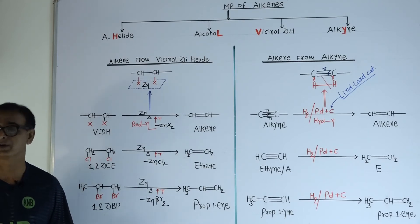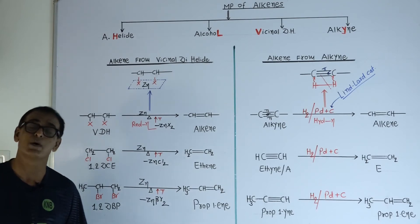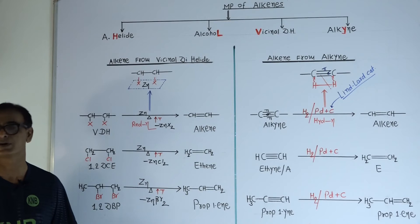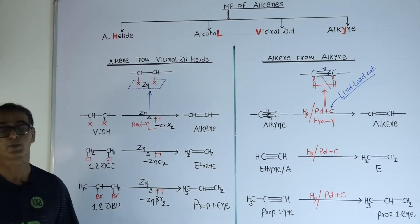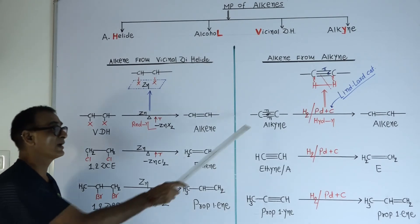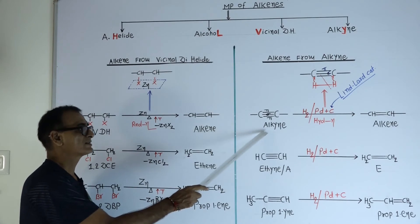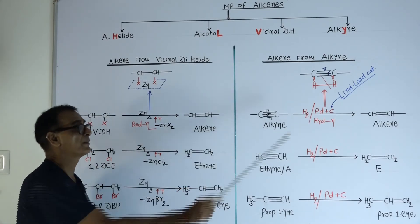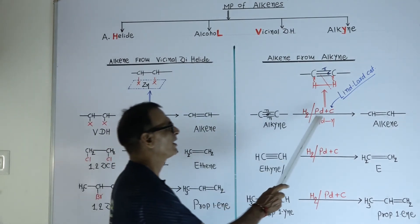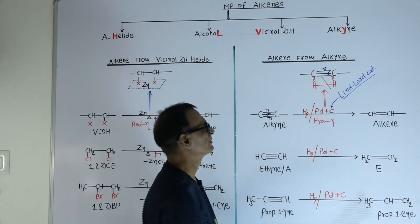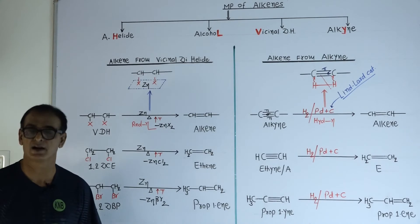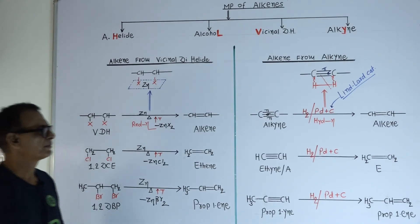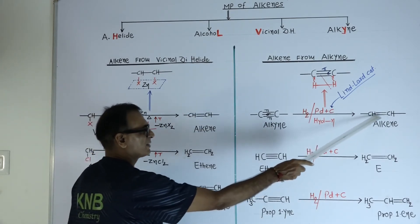During the reaction — cleavage of bonds in the reactant and formation of new bonds in the product is known as a chemical reaction. Here during the reaction, the pi bond will break. When this alkyne is heated with hydrogen in the presence of a catalyst like palladium plus carbon, this catalyst is known as the Lindlar catalyst. At that time, you will get CH double bond CH.